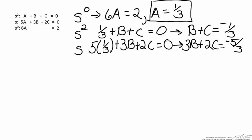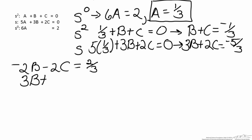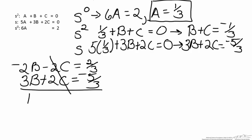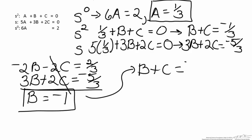We can now solve for b and c using algebra. We multiply the s-squared equation by negative 2, giving negative 2b minus 2c equals positive 2/3. Adding this to the s equation — 3b plus 2c equals negative 5/3 — the two c terms cancel, leaving b equals negative 1. To find c, we substitute into b plus c equals negative 1/3: negative 1 plus c equals negative 1/3, so c equals positive 2/3.